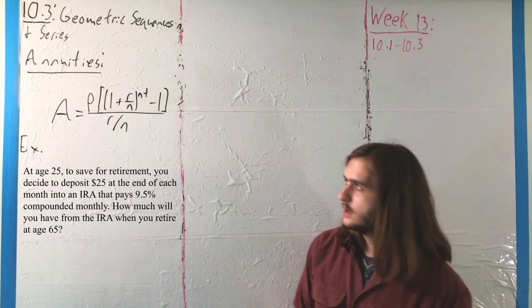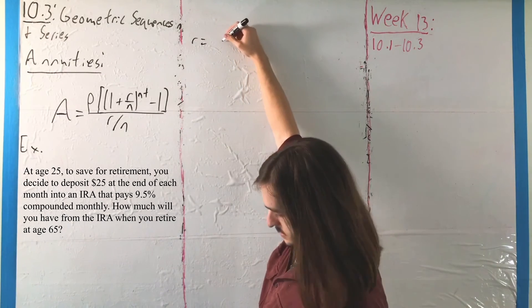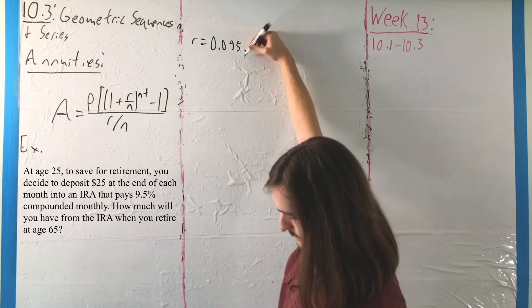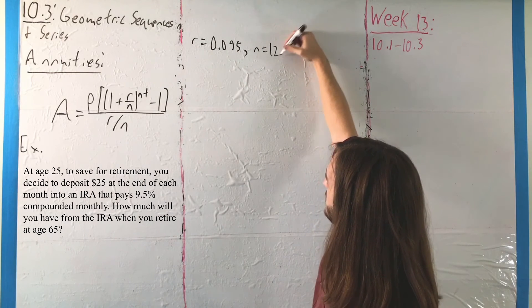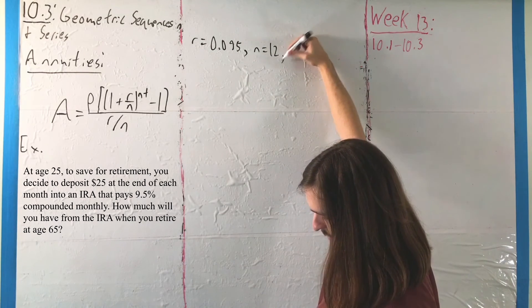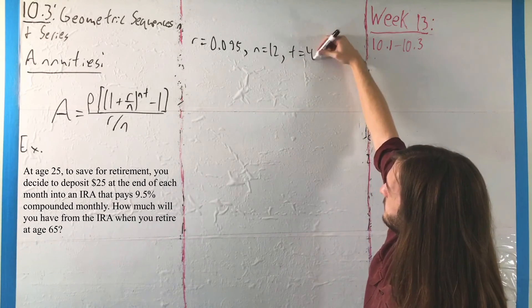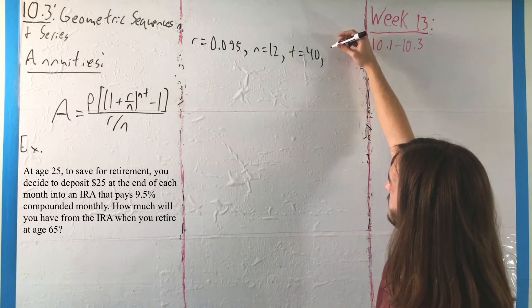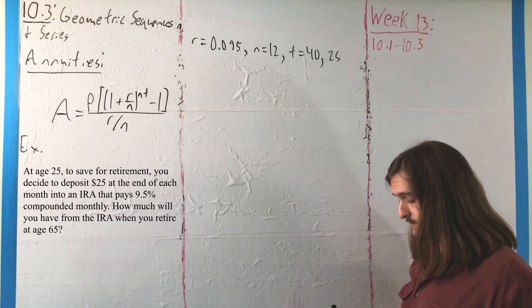So in this case, thinking about what we have here, our rate R is going to be 0.095. Our number N, the amount of compounded periods in a year, is 12. T is going to be the difference between 65 and 25, or 40 years. And our principal, our initial that we're making every month, is $25.